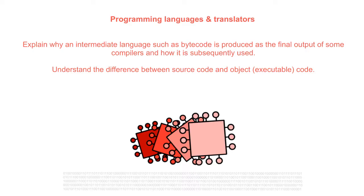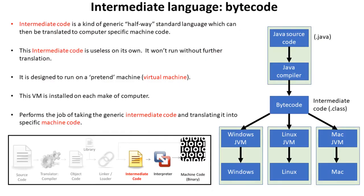In this video we're going to explain why an intermediate language such as bytecode is produced as the final output of some compilers and how it's subsequently used. We're going to focus on the intermediate code stage of our diagram, and explain what it is and why some languages generate it. You can think of intermediary code as a kind of halfway standard language which can then be translated further into machine specific code.